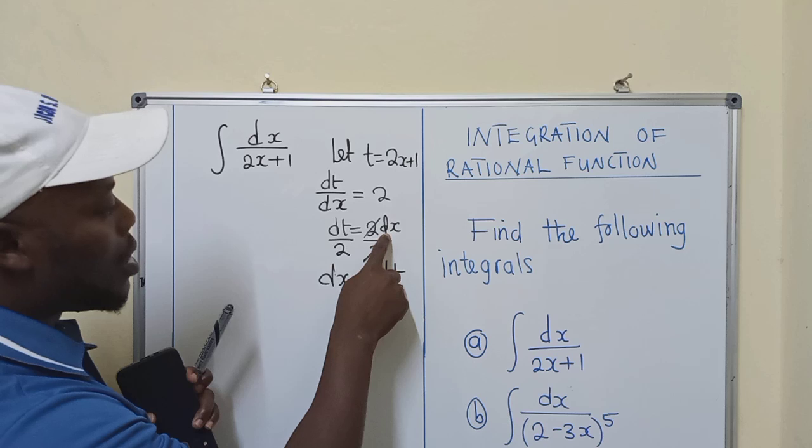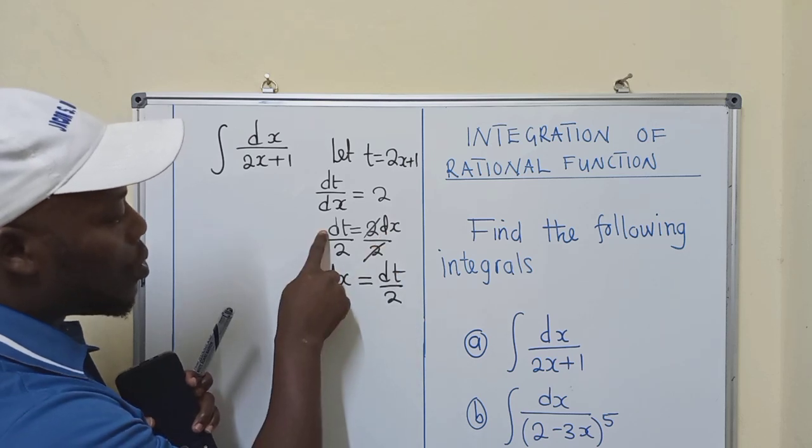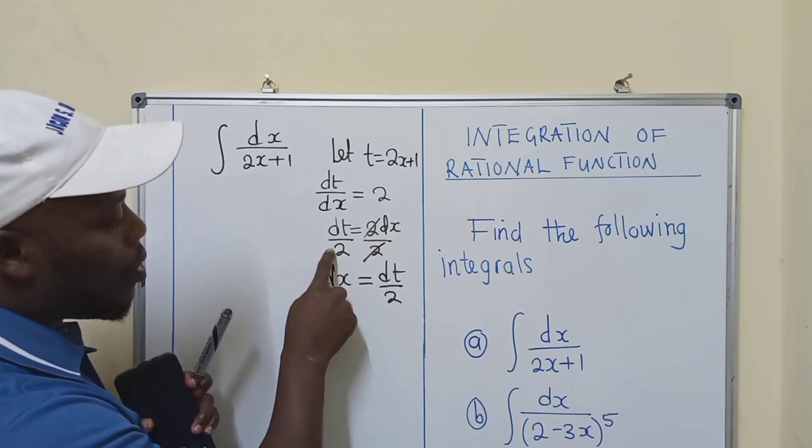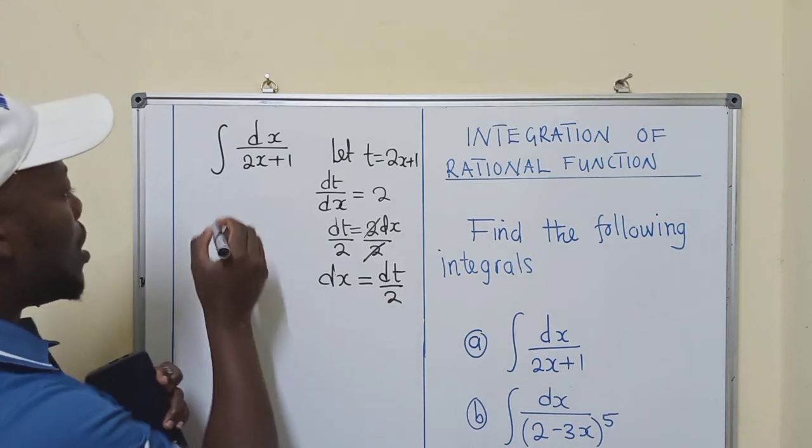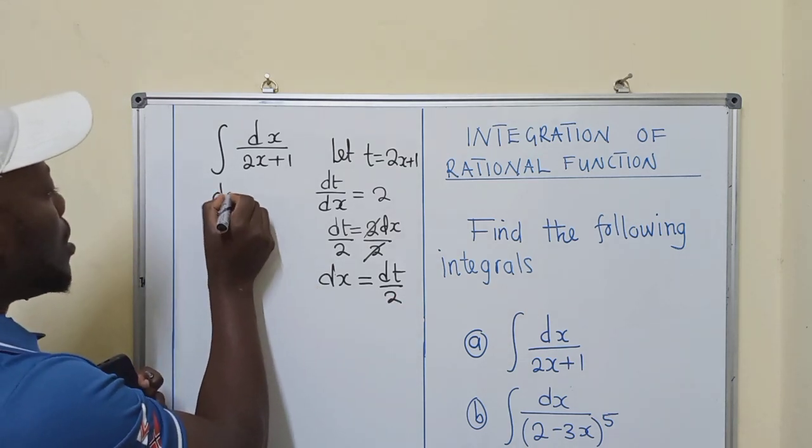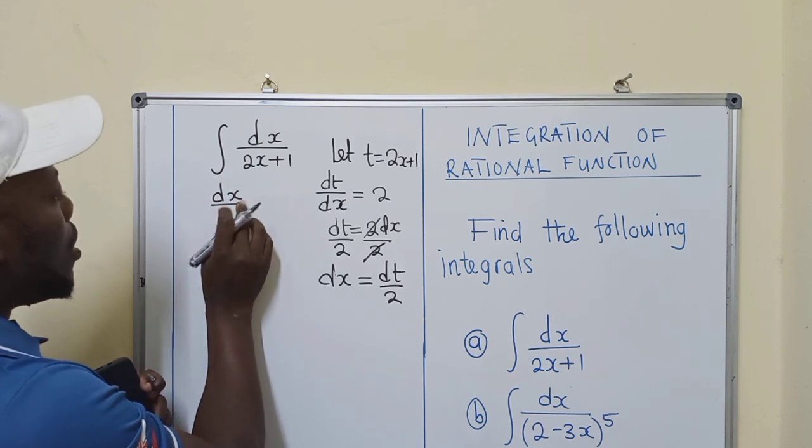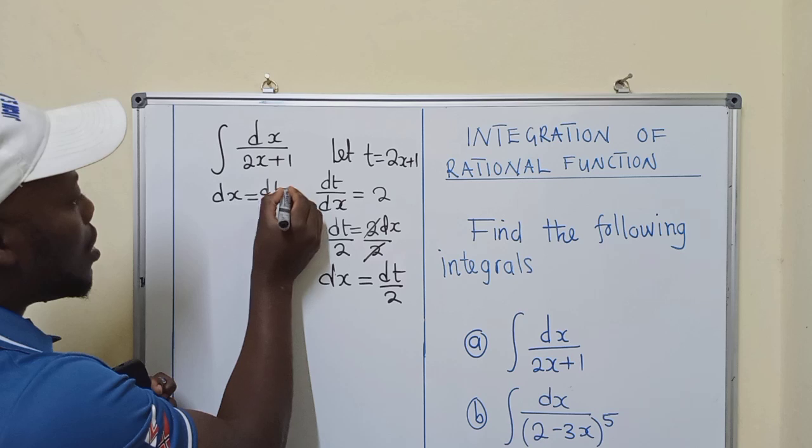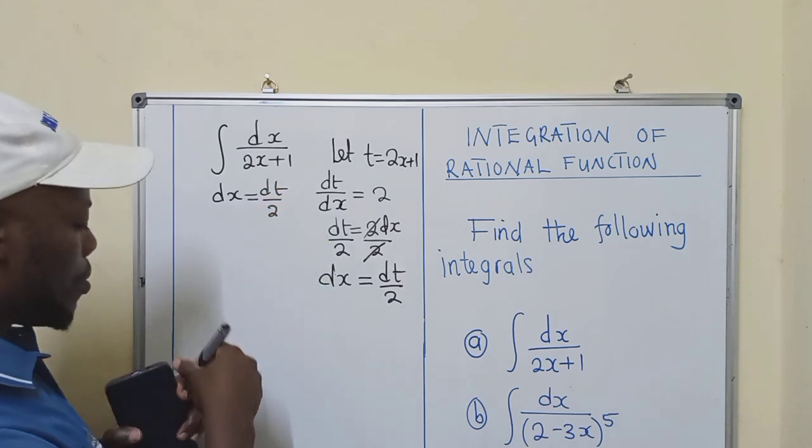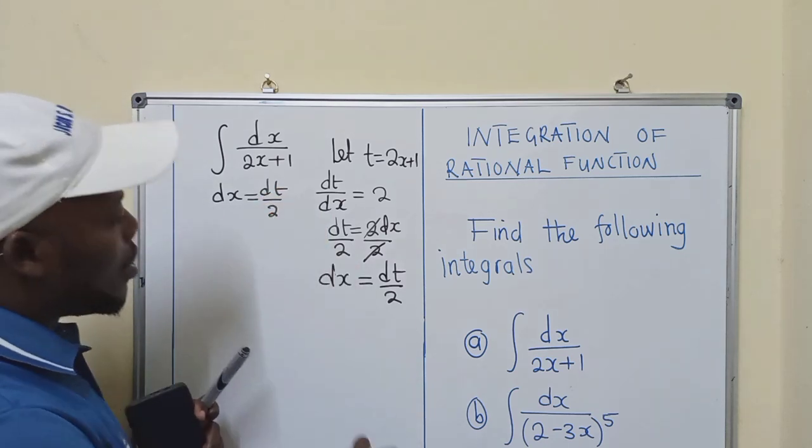Alright. So dx, which is here, is equal to dt over 2. So this is very important. I'll write it here. dx is equal to dt over 2. So we will need this. It's very important.